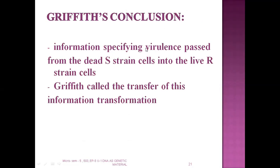Griffith's conclusion was that information specifying virulence had passed from the dead smooth strain into the live rough strain. Though the smooth strain was dead, it contained something virulent that passed on to the rough cells, transformed them, and caused the mice to die. Griffith called the transfer of this information 'transformation' — the virulence was being transferred from the smooth cell to the rough cell.